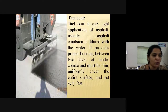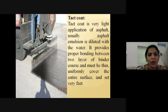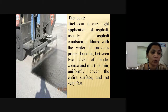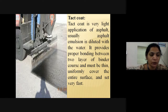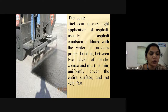Tack coat is a very light application of asphalt — usually asphalt emulsion diluted with water. It provides proper bonding between two layers of binder course and must thinly and uniformly cover the entire surface, setting very fast. A tack coat is a sprayed application of asphalt binder upon an existing asphalt or Portland cement concrete pavement prior to an overlay or between layers of new asphalt concrete.